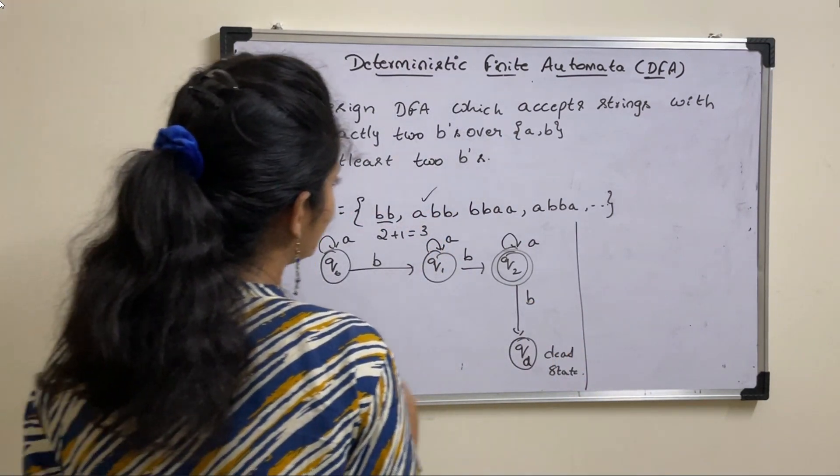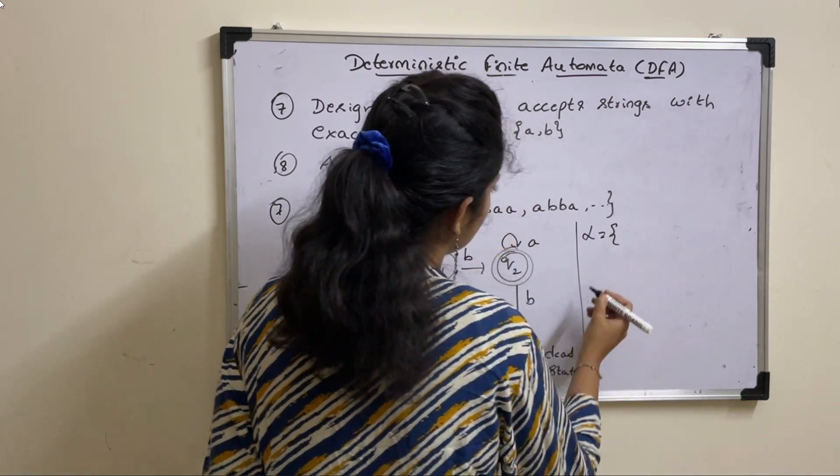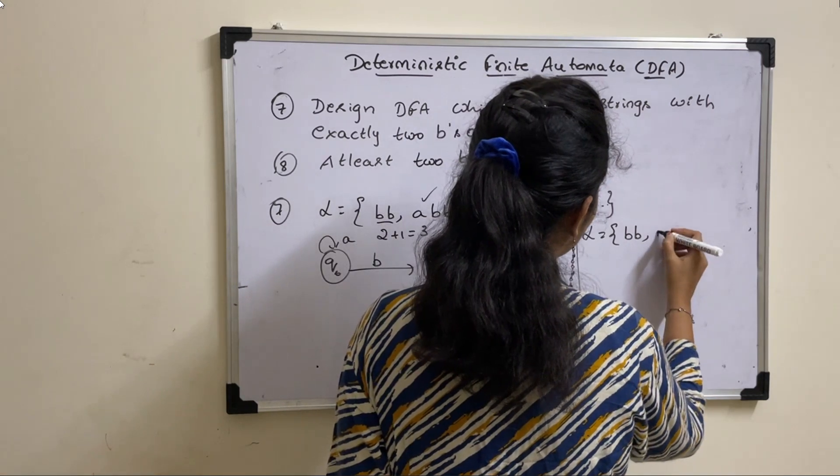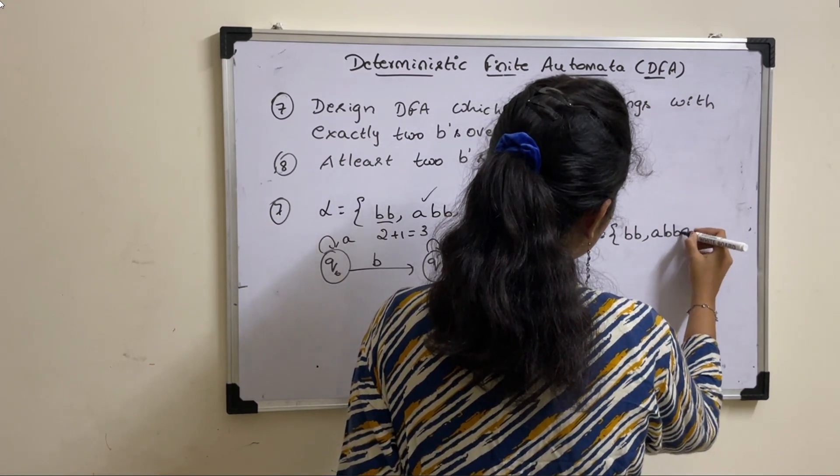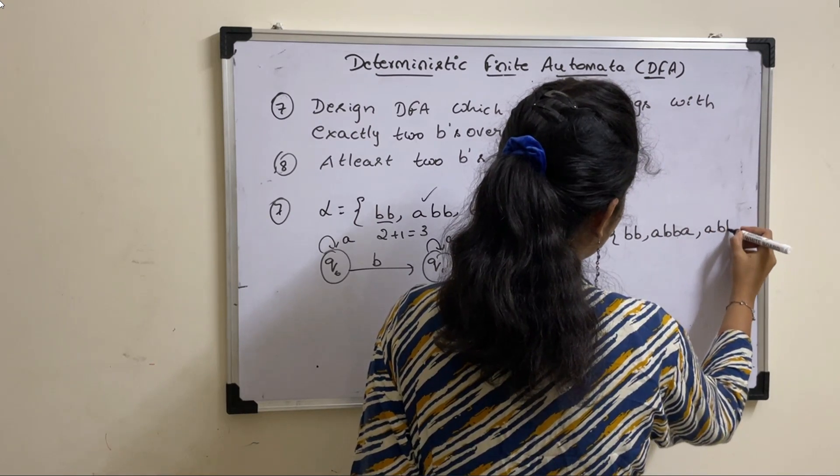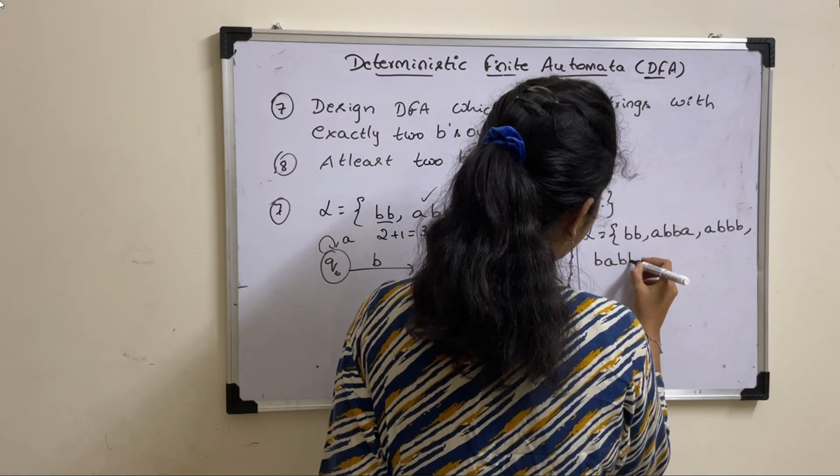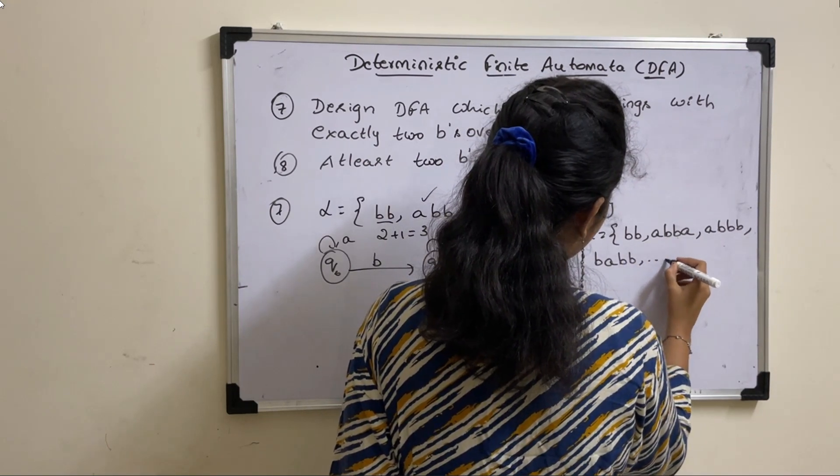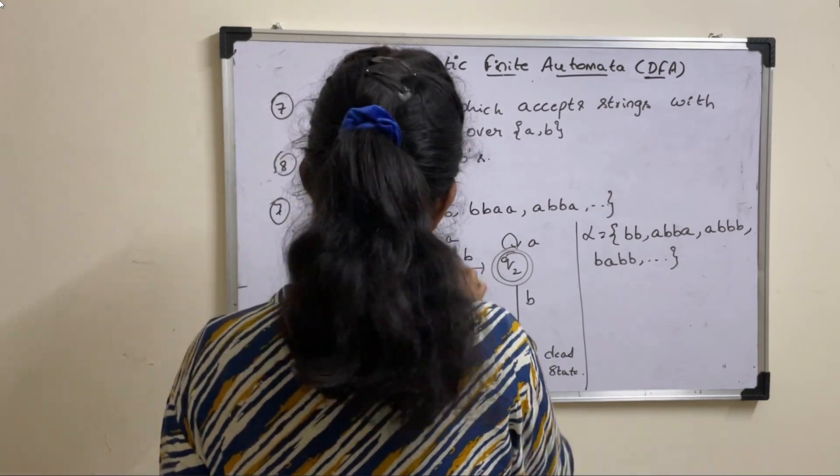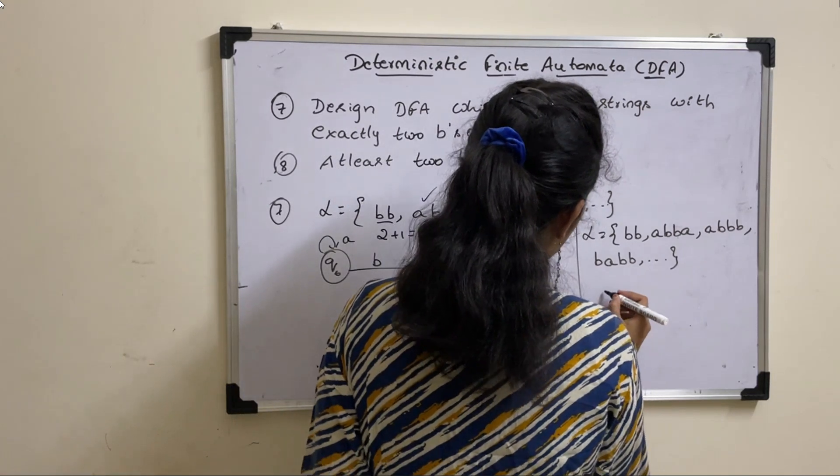Next, let us see the eighth one. At least two B's. So at least two B's language is BB, and you can have any number of A's and B's. BBB and so on. You can have more than two B's. At least two B's means you can have more than two also.